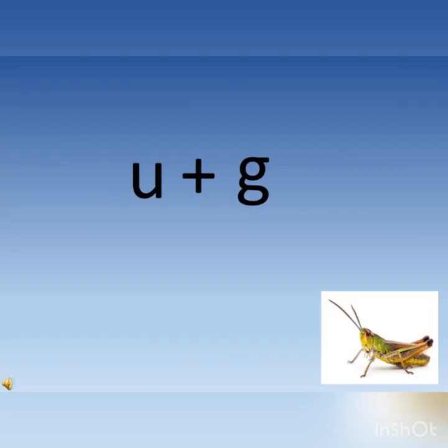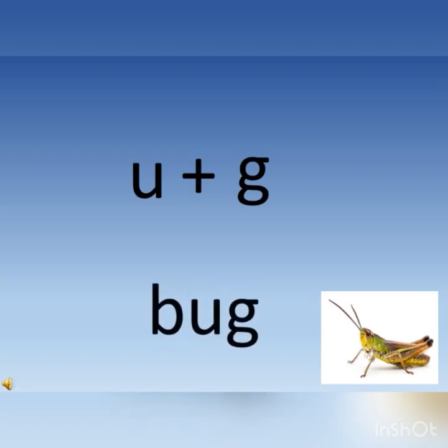Now moving on. U plus G says ag. And the word is b, ag, bug. B, ag, bug. Children, you are not going to break each word. We are going to say b, ag, bug. U and G will be read as ag, together.